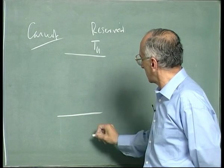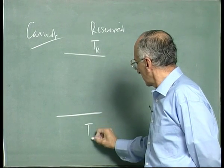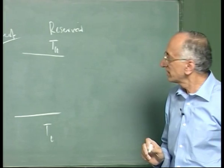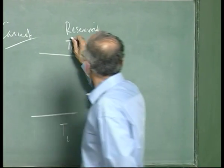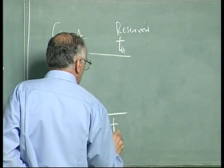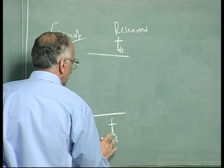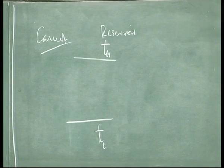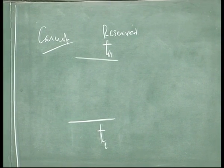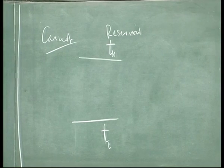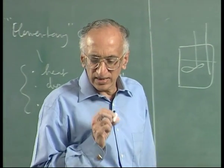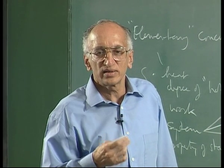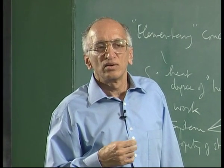He assumed that there was a T_H, a high temperature, and a low temperature reservoir. You still do not know what absolute temperature is at this point. Carnot introduced the idea of absolute temperature, although the idea of ideal gas absolute temperature had been introduced by Gay-Lussac earlier.